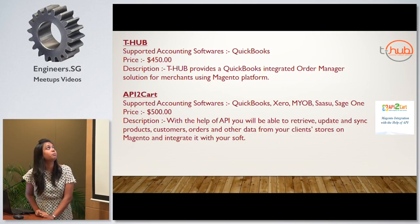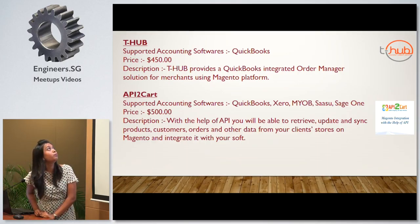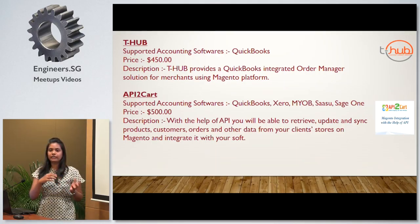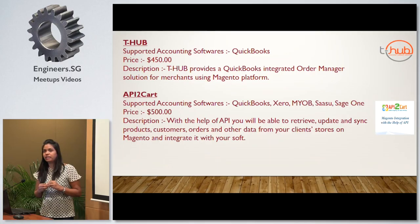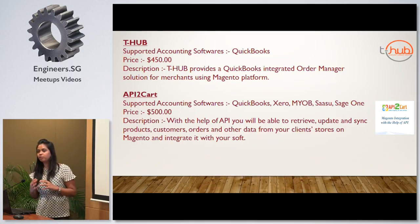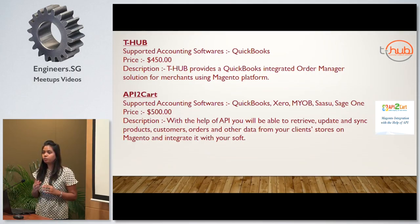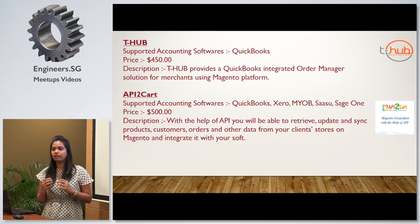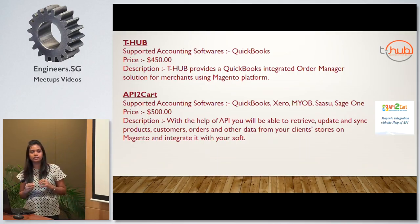T-Hub supports QuickBooks as its accounting software. Its price is $50. It provides two-way interactivity between Magento and accounting softwares and has two types: T-Hub Online and T-Hub Desktop. T-Hub Online provides cloud-based interaction between cloud-based Magento and cloud-based QuickBooks.